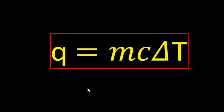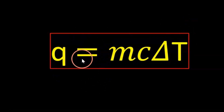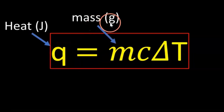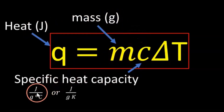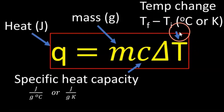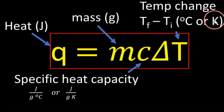Our main equation for heat transfer is Q = mcΔT — I call this the MCAT equation. Q is the heat (energy transferred as heat), m is the mass (often in grams), c is the specific heat capacity in joules per gram degree Celsius or joules per gram Kelvin, and ΔT is the temperature change: T-final minus T-initial. We can use degrees Celsius or Kelvin because a change in degrees Celsius equals a change in Kelvin.